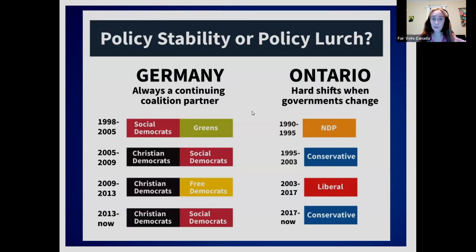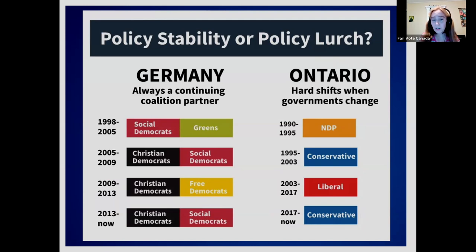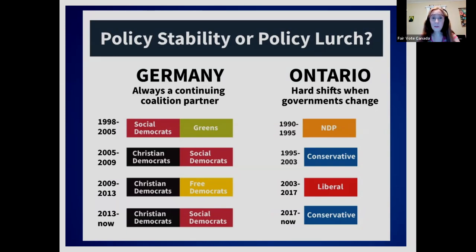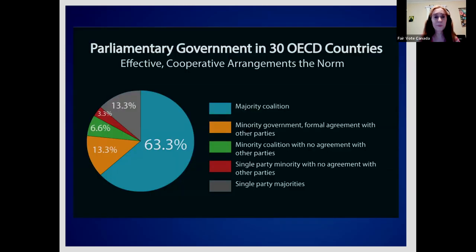Comparing Germany to Ontario illustrates stability well. In Germany, when governments change, there is typically a continuing coalition partner, so you see continuity — the Social Democrats continuing from one government to the next, or the Christian Democrats doing the same. Instead of completely different policies swinging left then right, you get some continuity and predictability.